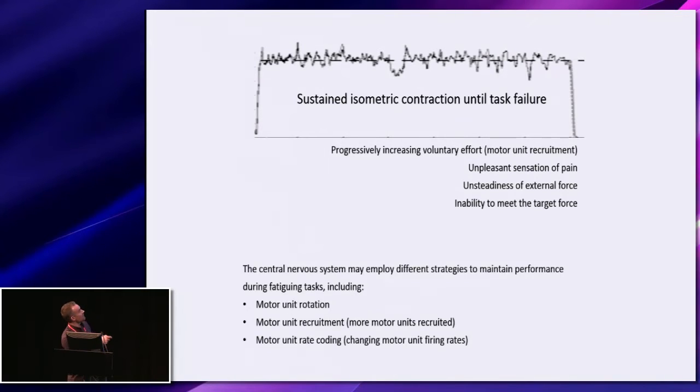We were interested in what happens here and we tried to identify and track individual motor units. That proved quite difficult so I won't present the results here. There are various ways that the central nervous system can try to maintain performance in the face of the changing contractile properties.